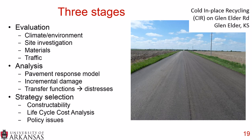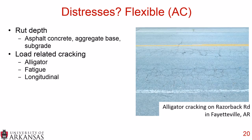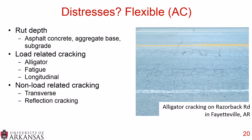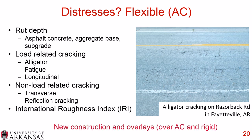For flexible pavement, the distresses explored in AASHTOWARE include rut depth — in just the asphalt concrete, aggregate base, subgrade, or a combination. There are different types of load-related cracking including alligator cracking, fatigue cracking, and longitudinal cracking. There are non-load-related cracking types including transverse cracking and reflection cracking. And finally there is the International Roughness Index, or IRI, which measures pavement smoothness. This applies to both new construction and overlays, where overlays can be asphalt concrete over existing asphalt concrete or over rigid pavements.